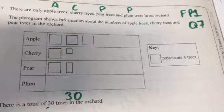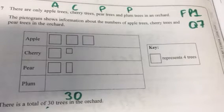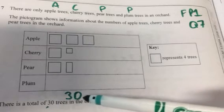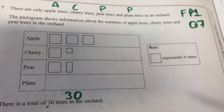There are only apple trees, cherry trees, pear trees and plum trees in an orchard. The pictogram shows information about the numbers of apple trees, cherry trees and pear trees in the orchard. There is a total of 30 trees in the orchard. Complete the pictogram.